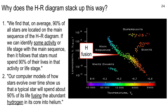Everything on the main sequence is basic Universe 101: hydrogen fusion into helium. About 75% of the visible universe is hydrogen and about 24% is helium, and that's kind of reflected here. Eventually the giant stars are going to start fusing helium, which is a completely different nuclear reaction.